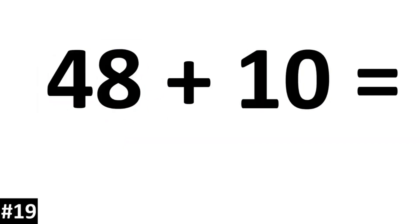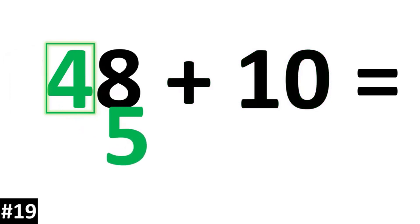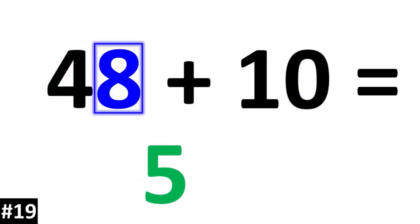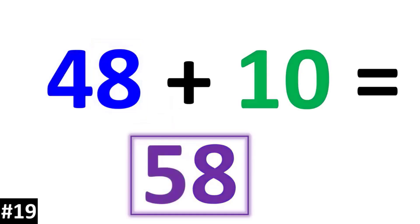How about 48 plus 10? The tens digit of 4 is going to go up by 1 and become a 5. We bring down the 8. 48 plus 10 is 58.